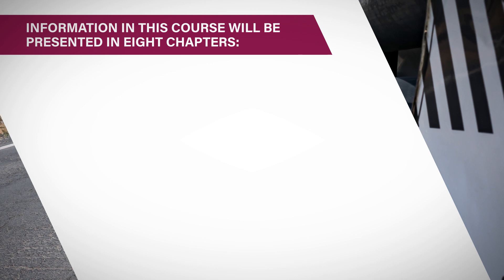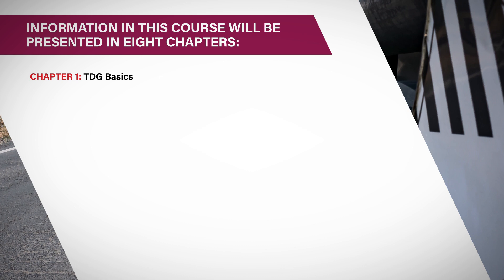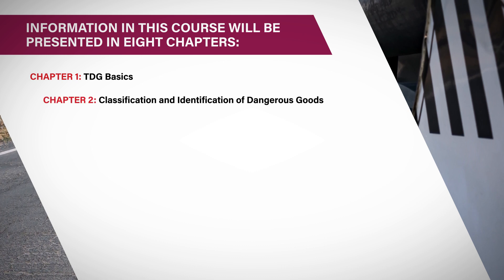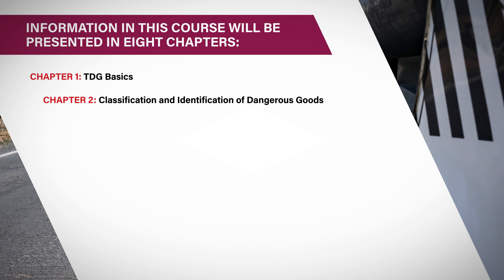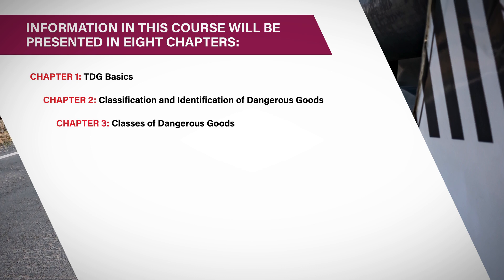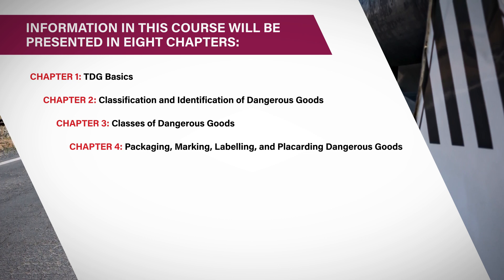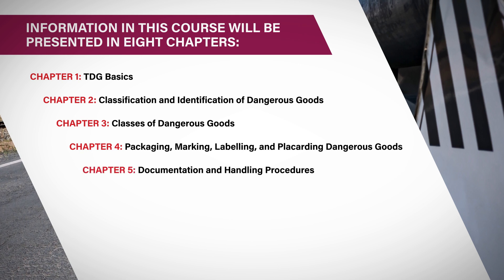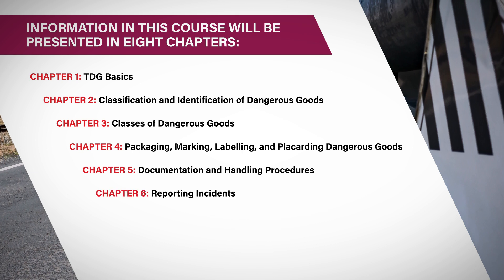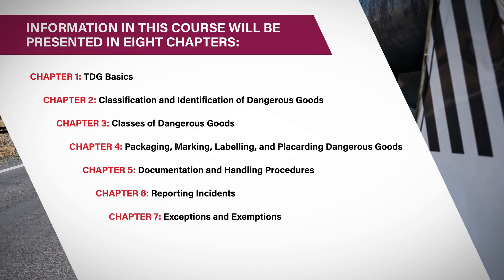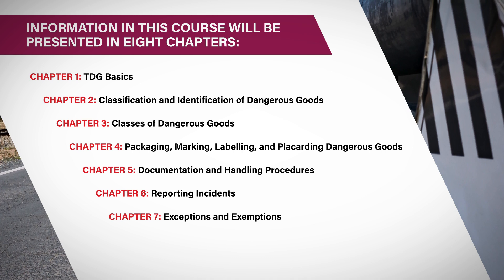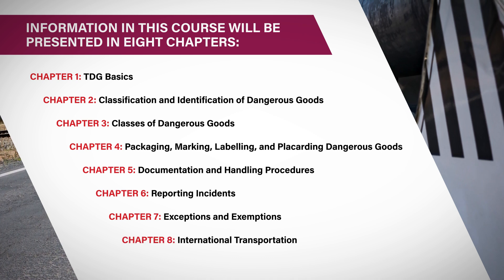Information in this course will be presented in eight chapters: Chapter 1, TDG Basics; Chapter 2, Classification and Identification of Dangerous Goods; Chapter 3, Classes of Dangerous Goods; Chapter 4, Packaging, Marking, Labeling, and Placarding Dangerous Goods; Chapter 5, Documentation and Handling Procedures; Chapter 6, Reporting Incidents; Chapter 7, Exceptions and Exemptions; and Chapter 8, International Transportation.